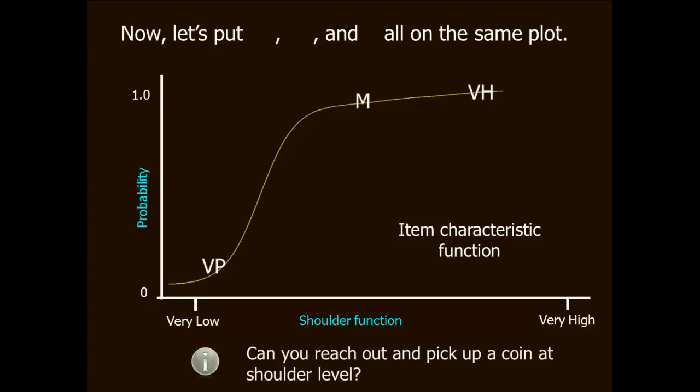It's the IRT model, the mathematical equation, that determines the shape of this line. And you can see that once I have this line, I can estimate the probability of saying yes for any level of shoulder function, anywhere between very low and very high.